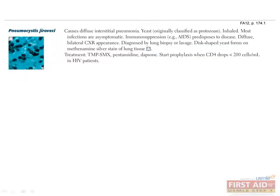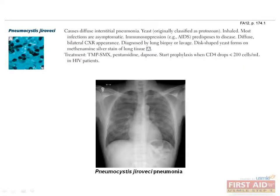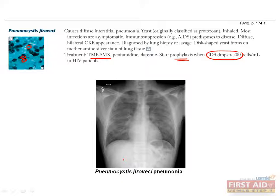Pneumocystis jirovecii is an opportunistic infection that is an important cause of interstitial pneumonia seen in AIDS patients. It used to be known as Pneumocystis carinii and was classified as a protozoan, but is now recognized as a fungus. You may still see Pneumocystis carinii pneumonia (PCP) in older microtexts, and hear Pneumocystis jirovecii pneumonia still referred to as PCP in the hospital. Prophylaxis is indicated with TMP-SMX in AIDS patients, starting when the CD4 count drops below 200. Its characteristic disc shape — the yeast form — can be seen with methenamine silver stain on a lung biopsy sample.